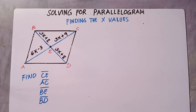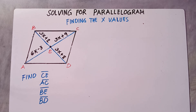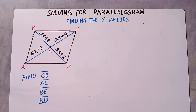We are told to find the X values to find the sides. Now class, this is more complicated than the first video that we had, since in the first video, sides and angles were already given and you just had to find the other sides and angles. We talked about the properties of parallelogram, so it is important for you to see the first video before you proceed with this one. I will put the link in the description below.